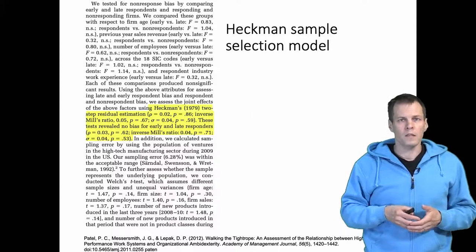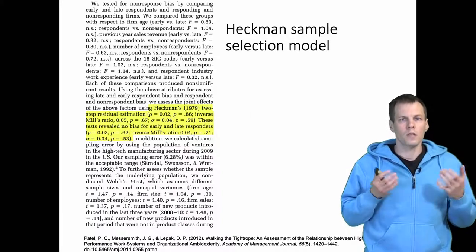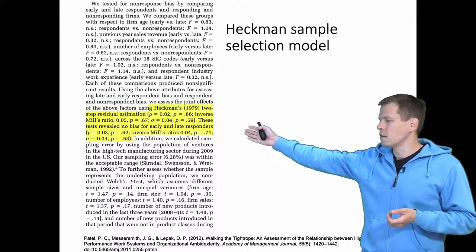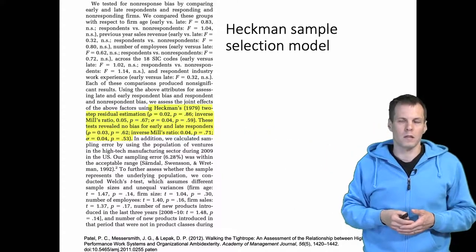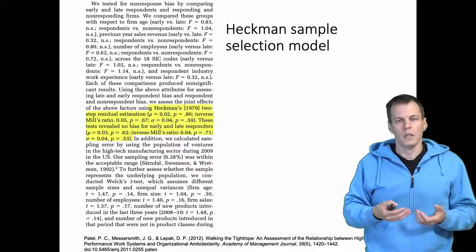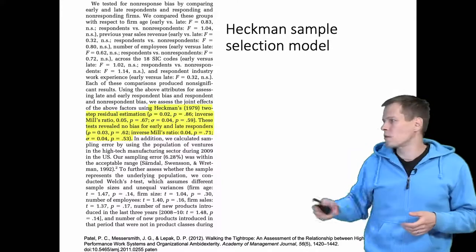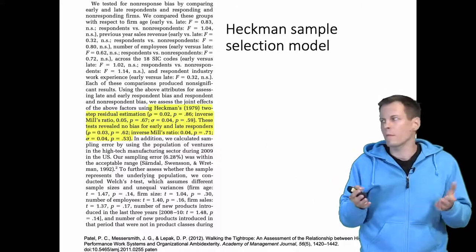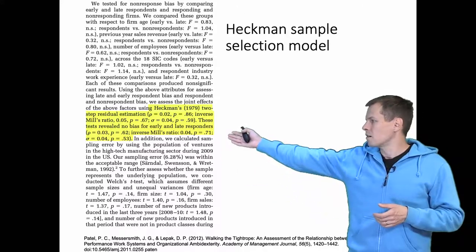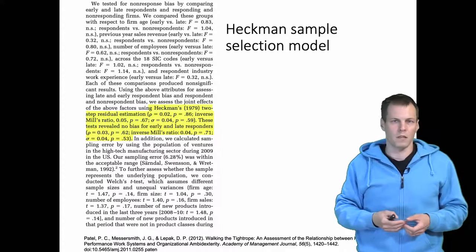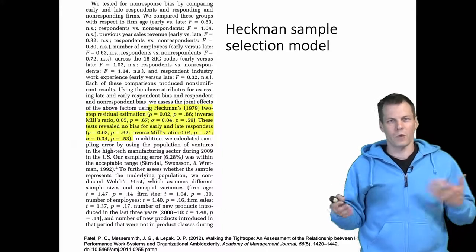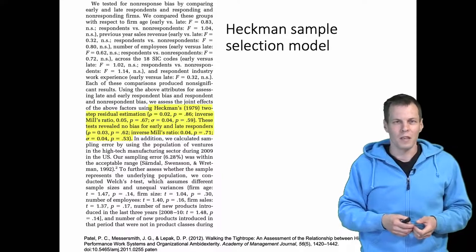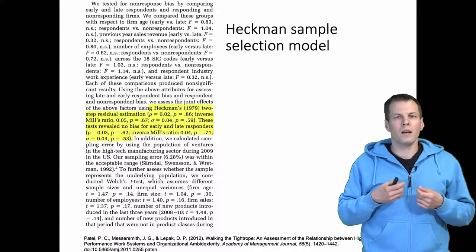When the Heckman selection model is applied in papers, you can see a couple of key terms appear. You'll see citations to the 1979 paper, the word Heckman, and the term inverse mills ratio. So what is the inverse mills ratio — who is Mills, why is it a ratio, and why do we take the inverse?